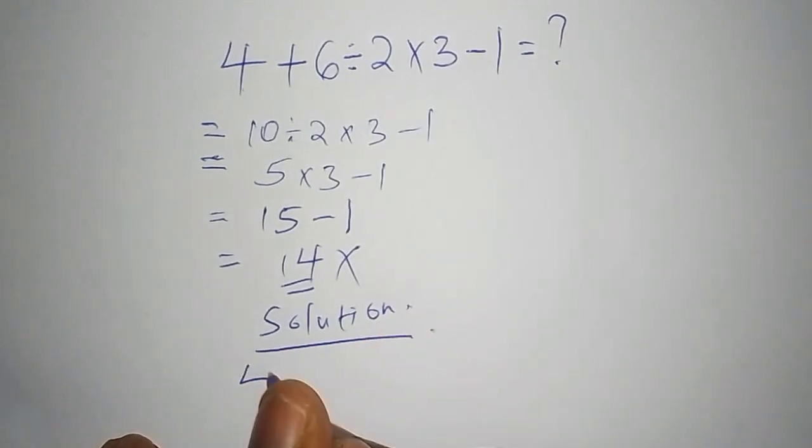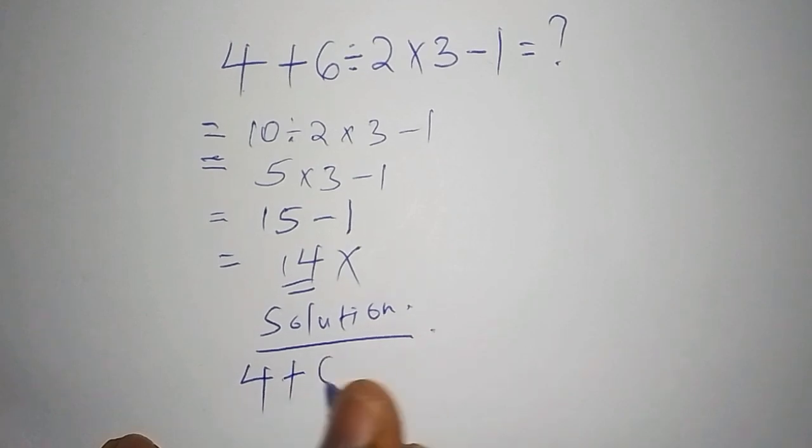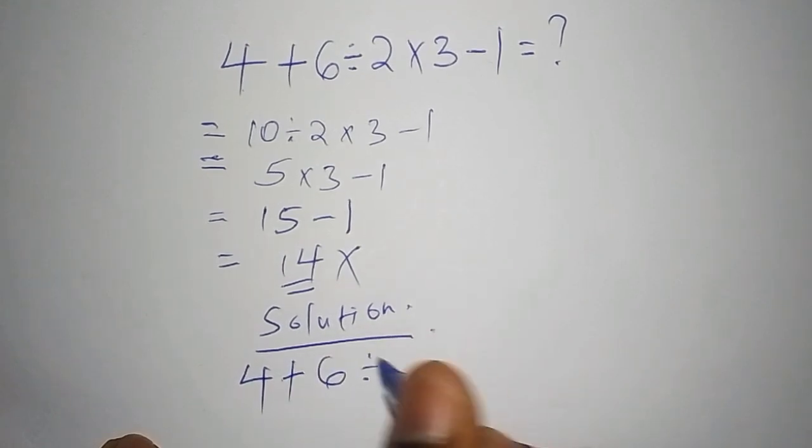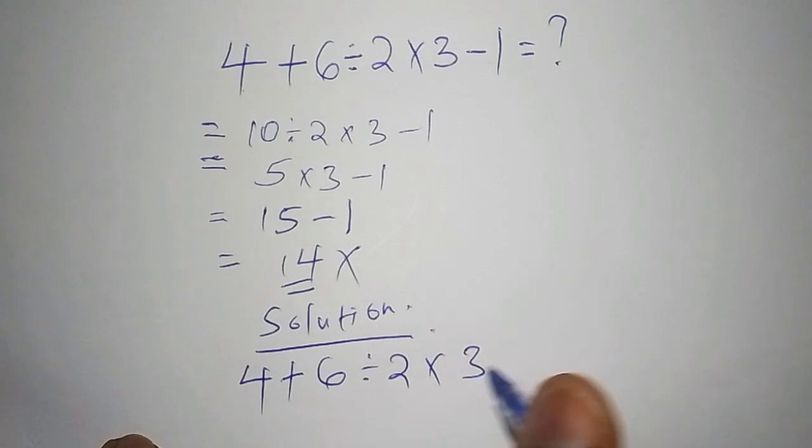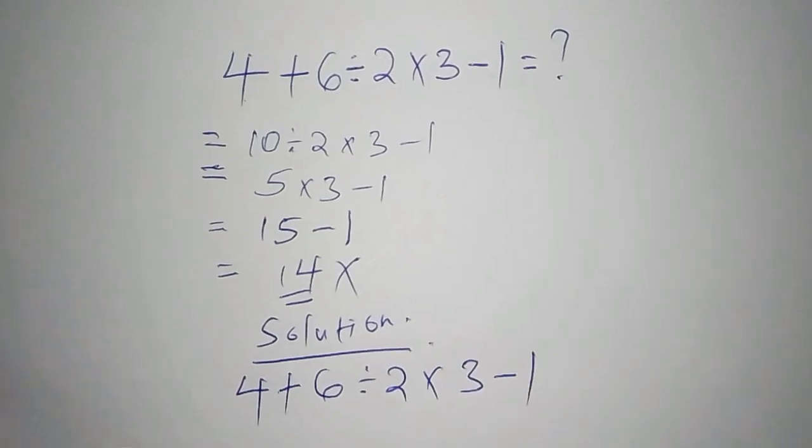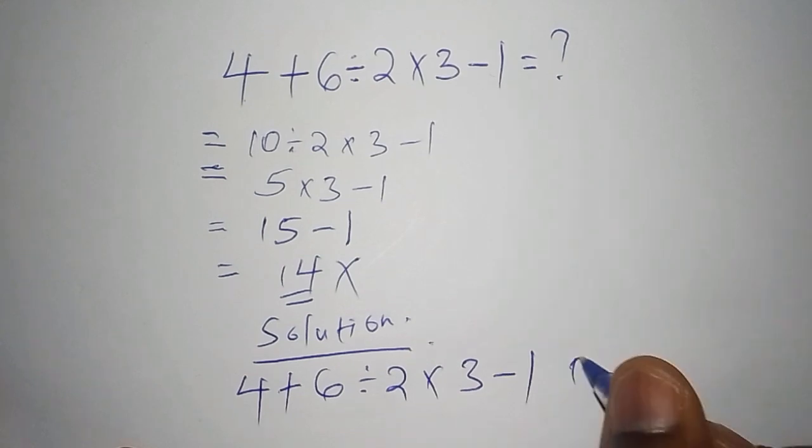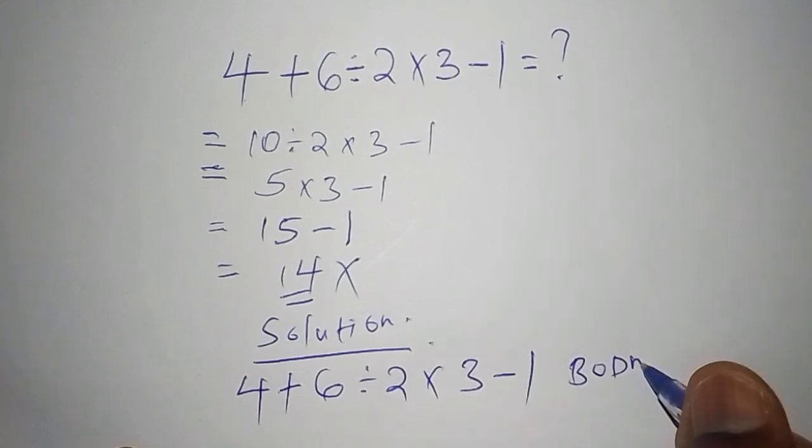So under the solution let's have the problem. So we have 4 add to 6 divide by 2 multiply by 3 subtract from 1. So the first step that you have to do before working it out we have to use what is called the BODMAS.